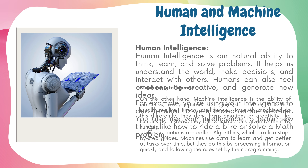Human and machine intelligence. Human intelligence is our natural ability to think, learn, and solve problems. It helps us understand the world, make decisions, and interact with others. Humans can also feel emotions, be creative, and generate new ideas. For example, you use your intelligence to decide what to wear based on the weather, or to learn new things like how to ride a bike or solve a math problem.